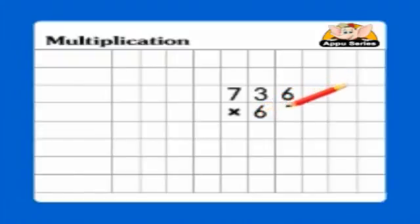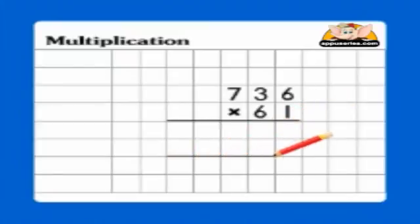Let's multiply 736 by 61. Ooh, that seems like two big numbers! But never fear when Appu is here. We'll make it so much fun that we'll finish it before we know it. Like in the previous problems, let's start from the right, shall we?